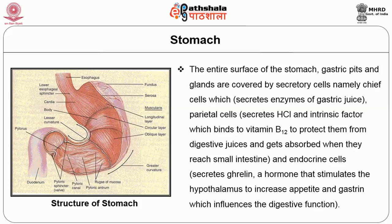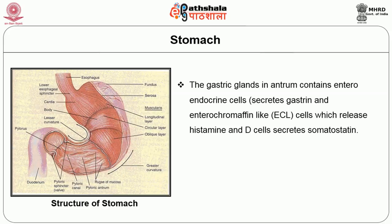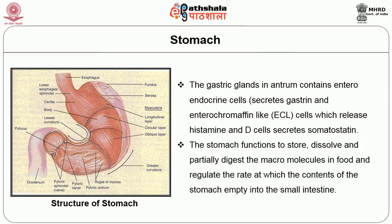The gastric glands in the antrum contain enteroendocrine cells which secrete gastrin, enterochromaffin-like cells which release histamine, and D cells which secrete somatostatin. The stomach functions to store, dissolve and partially digest macromolecules in food, and to regulate the rate at which the contents of the stomach empty into the small intestine.